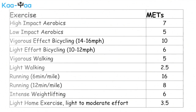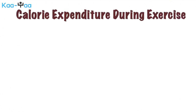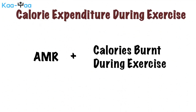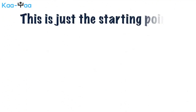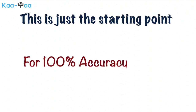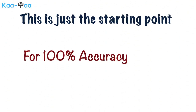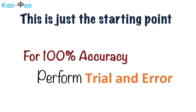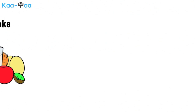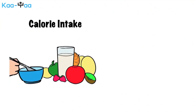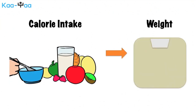Daily total calorie needs can then be calculated by adding the AMR and the calories burnt during exercise. It should be noted that the above calculation is just a starting point. To attain 100% accuracy in your estimate, you need to do trial and error, where you take calculated amounts of calories for a week and observe how much weight you gain or lose, and then accordingly change the diet.